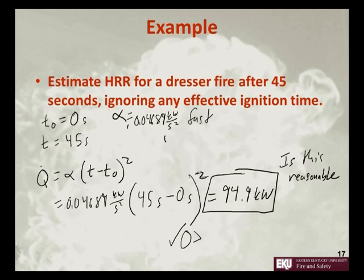We are less than, let's say, a megawatt, which is sort of the limit of our equation and would be the maximum that a dresser fire could give. If we watch a lot of fires, after 45 seconds, we don't expect it to be at full heat release rate yet.